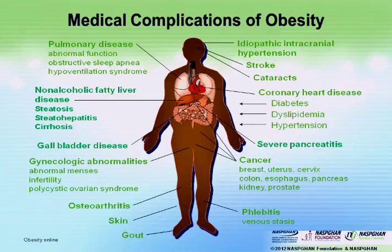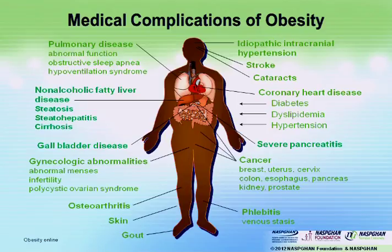When looking at the patient, it's very important to start from the top. These patients can sometimes develop pseudotumor cerebri, which causes loss of visual fields. They can develop strokes and cataracts even in childhood. They can develop sleep apnea — and may not be reporting snoring, but may just have ADHD symptoms. They can develop myocardial infarctions in childhood. They can have diabetes, dyslipidemia, and hypertension. In addition, they can develop PCOS, cancers usually seen in the 40s and 50s, gout, hyperuricemia, acanthosis, and phlebitis.